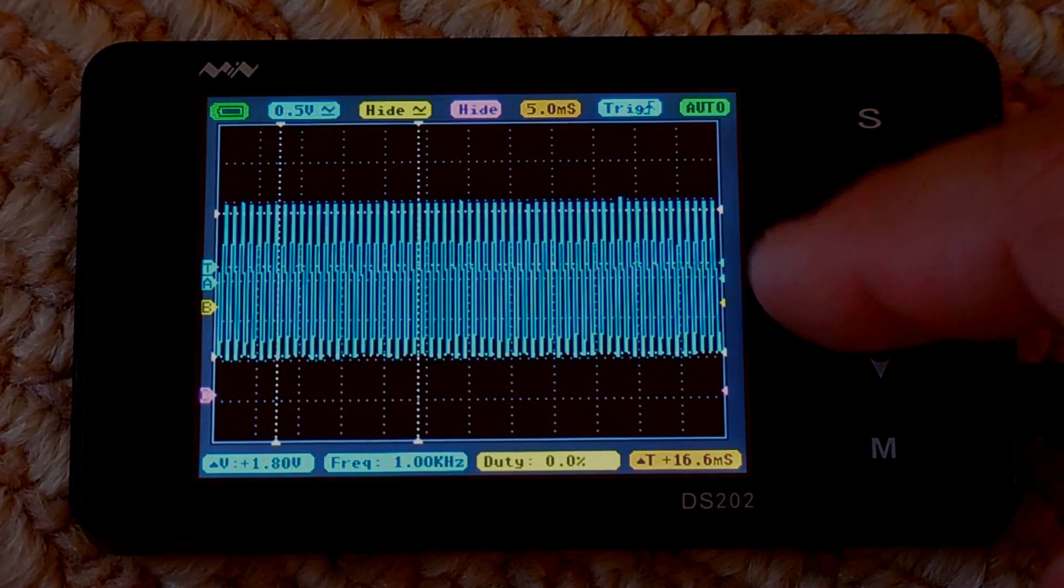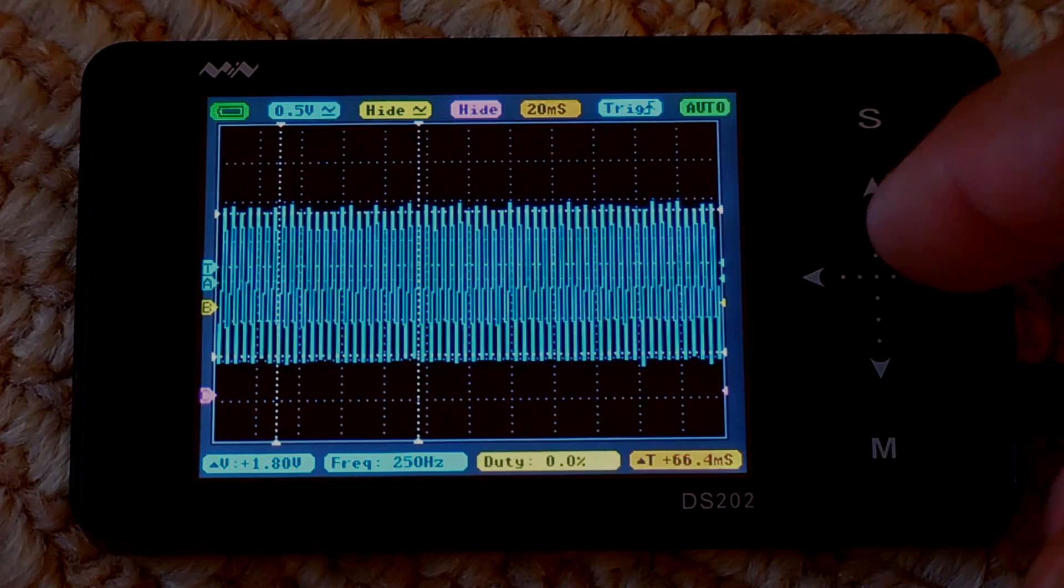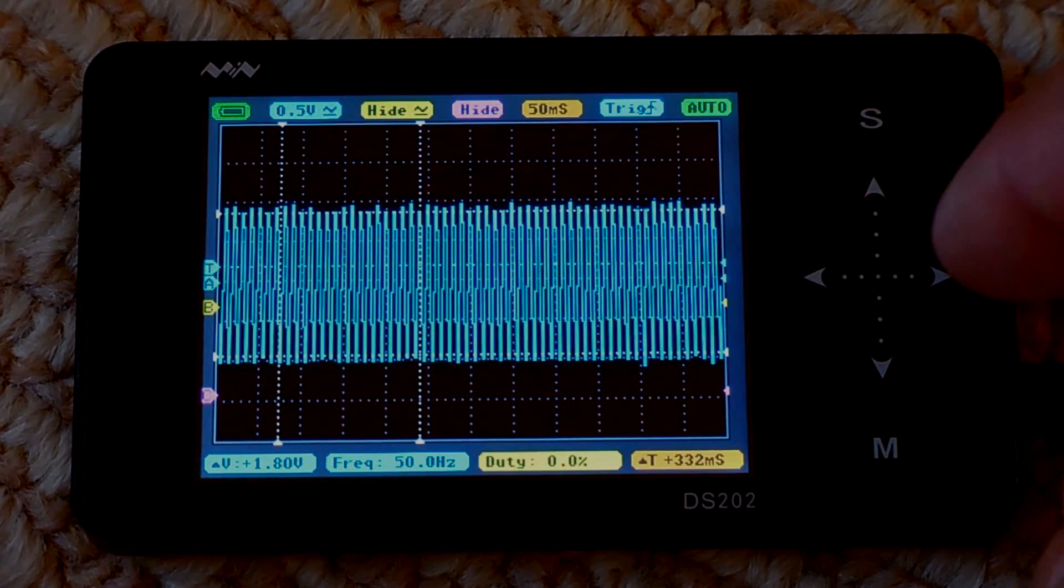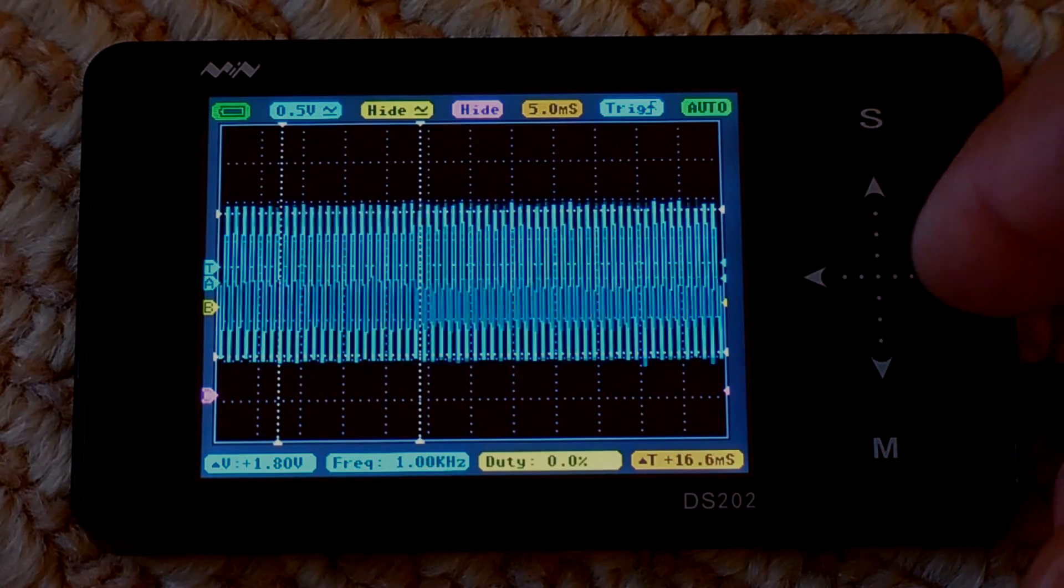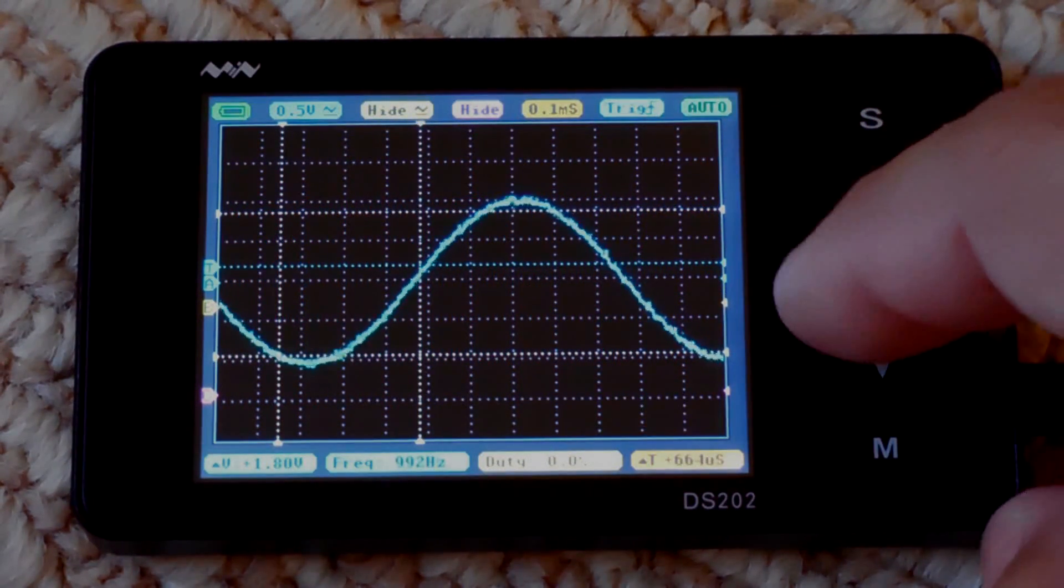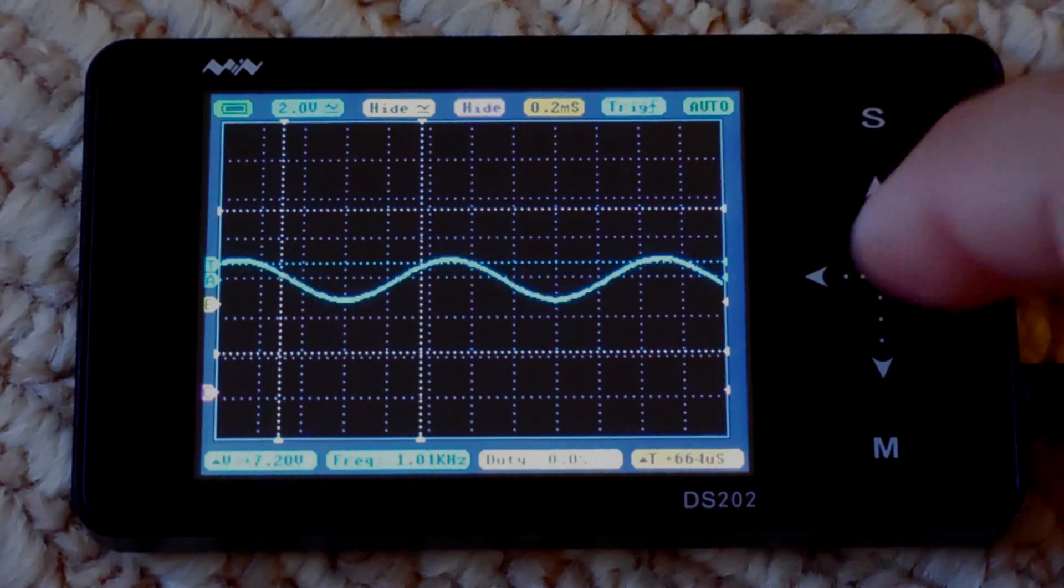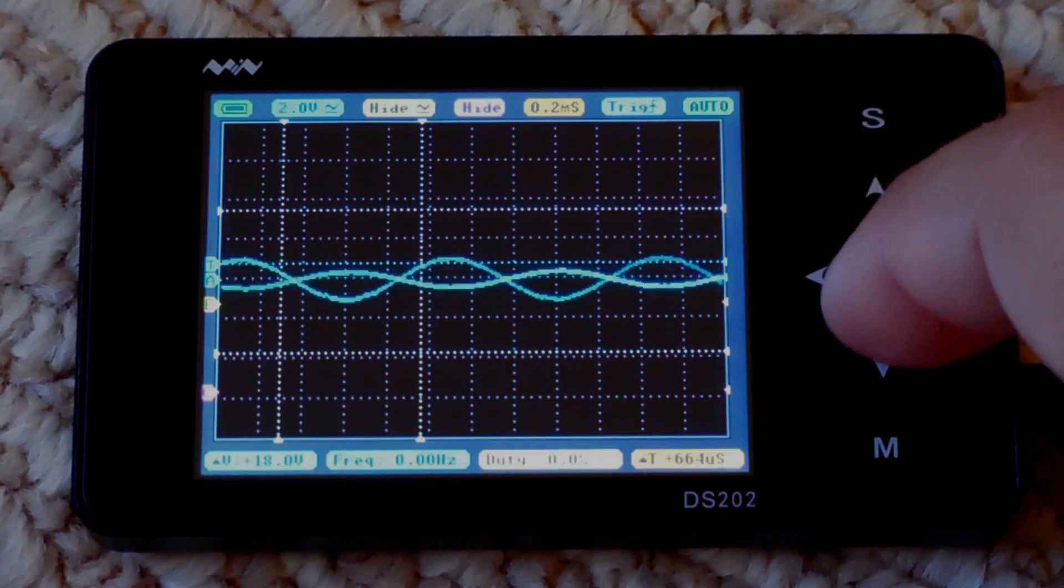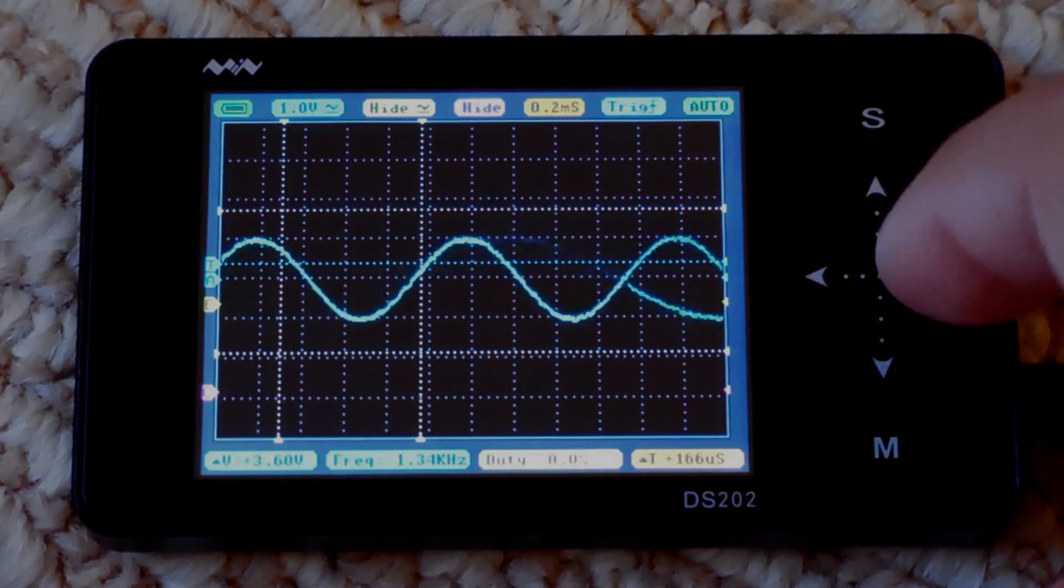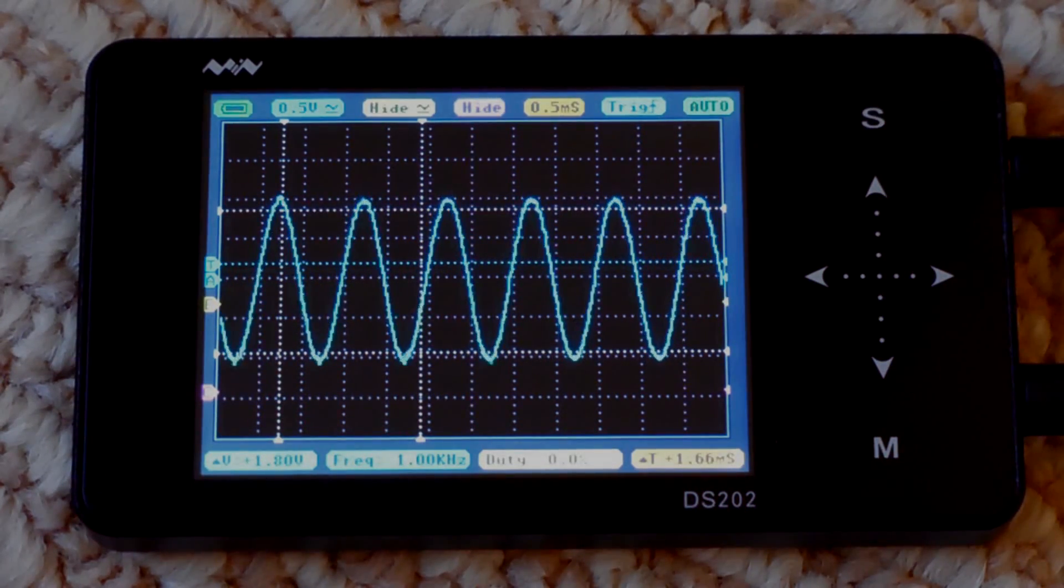And we want to scroll left and right. That changes the time. So if you just scroll left and right like this. Nothing going on. You went too far. Go back to the left now. There you go. Look at that. So now you want to do voltage. Up and down like this. And just keep going like this. And now we're going to change the time again. And you see how nice that works.